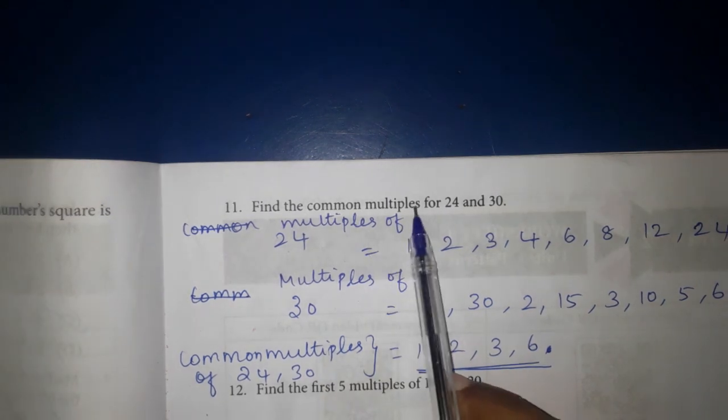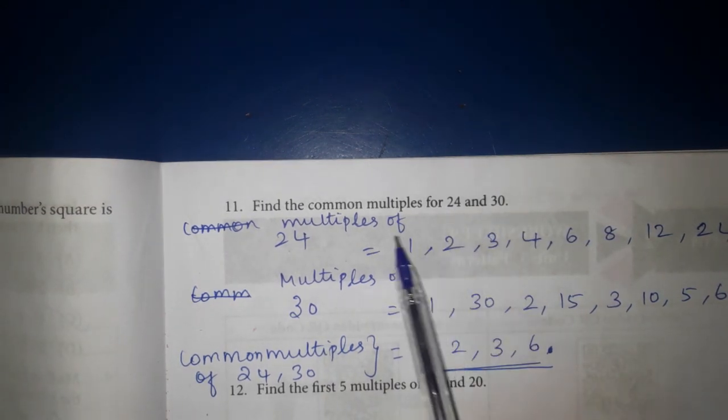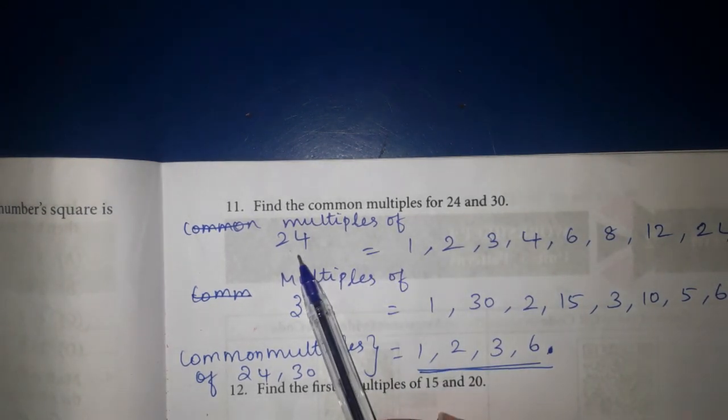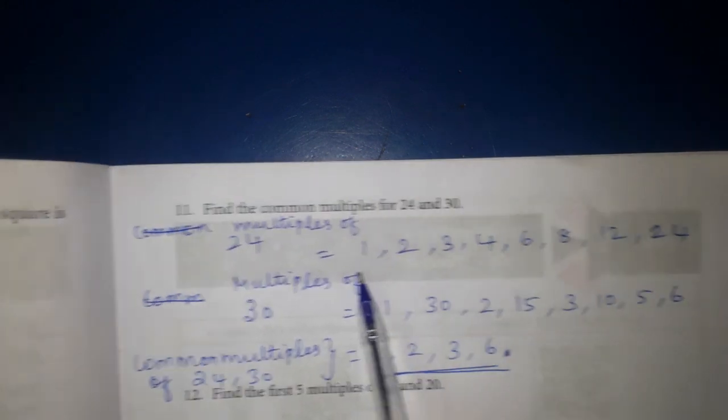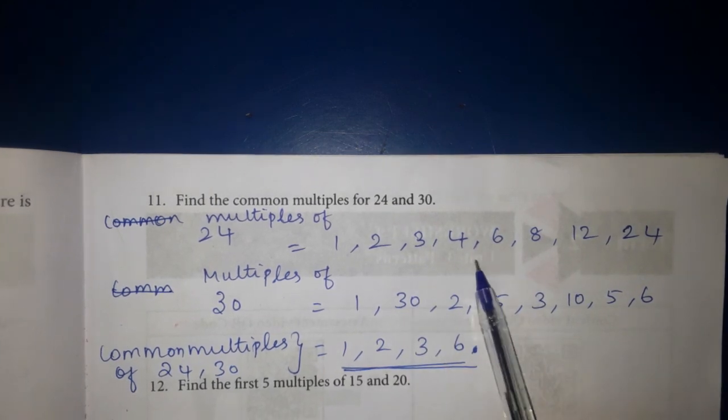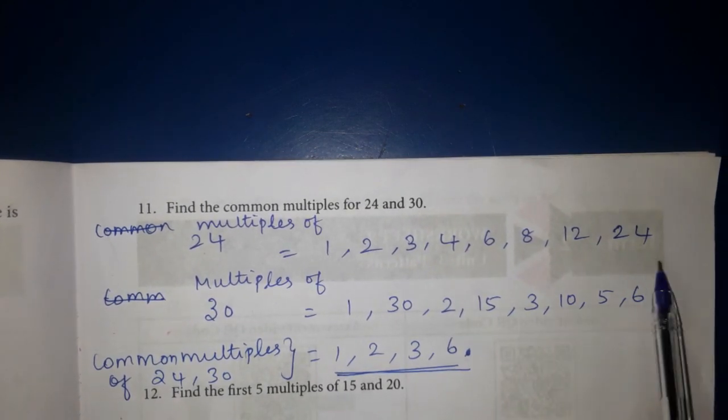11th one, find the common multiples for 24 and 30. First, multiples of 24 is 1, 2, 3, 4, 6, 8, 12, 24.